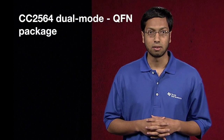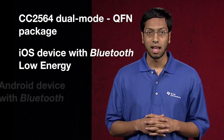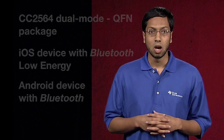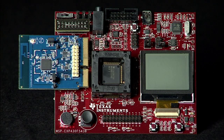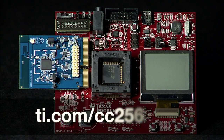This demonstration will show TI's CC2564 QFN device simultaneously connecting to an iOS device with Bluetooth Low Energy and an Android device via classic Bluetooth. We will then show data transfer over both on standard applications available in the respective app stores. We are going to use TI's MSP430F5438 experimenter board and CC256X QFN EM board, available from TI eStore and distribution channels, as well as standard iOS and Android devices. Make sure the Bluetooth stack on the experimenter board is flashed with the latest software available on the web.